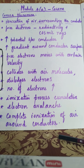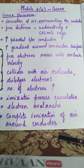We will start with Module 4, first part, which is Corona. This topic mainly covers the phenomena of corona, advantages of corona, factors affecting corona, methods of reducing corona, the derivation for critical disruptive voltage and visual disruptive voltage, as well as the power loss due to corona. Let me explain one by one in detail.